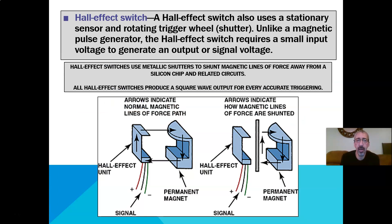Now if we get away from using a magnetic signal, we can have what's called a Hall effect switch. A Hall effect switch is used in a stationary sensor and has a trigger wheel, but this trigger wheel now is a shutter. Different from a magnetic pulse generator, a Hall effect requires a small input of voltage to create an output or a signal. Therefore, this gives us a digital signal.